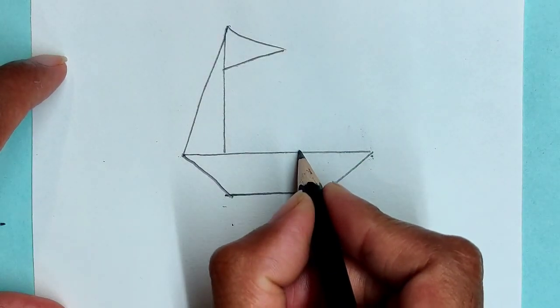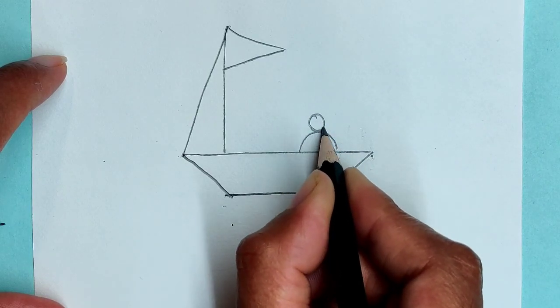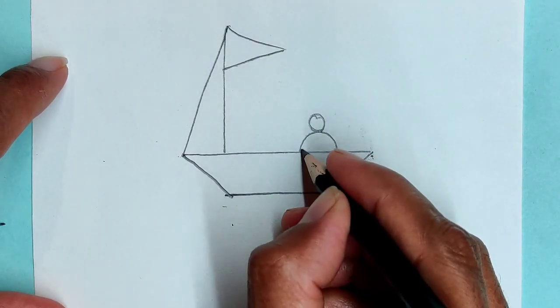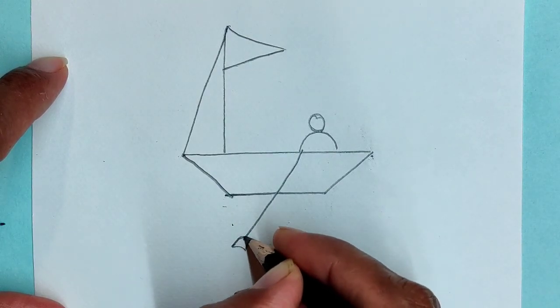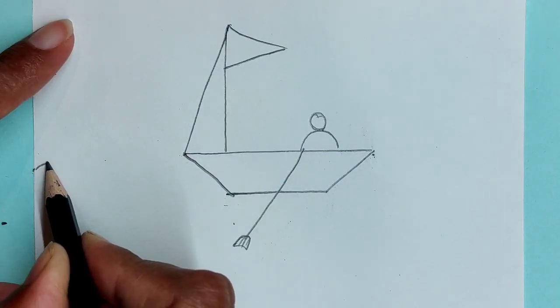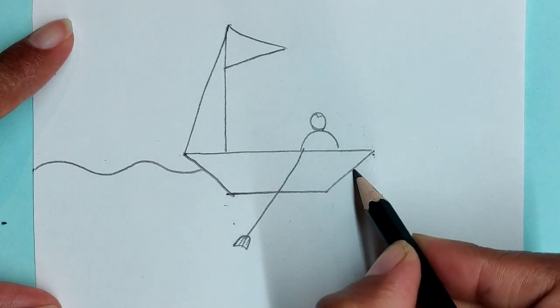Draw a semicircle and circle for showing a sitting figure on the boat. Draw wavy lines below the boat for water waves.